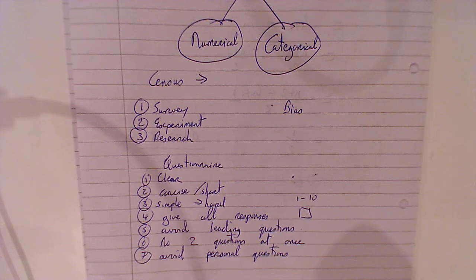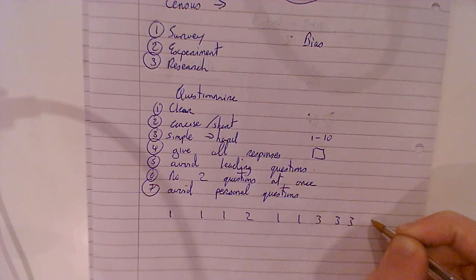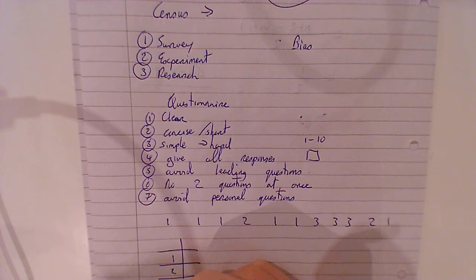Bias, I've gone through that. And that leaves us with frequency tables. Okay? So, let's say I'll give you the following numbers: 1, 1, 1, 2, 1, 1, 3, 3, 3, 2, 1. Okay? Frequency table. It's number 1, 2, 3. And this is the frequency.